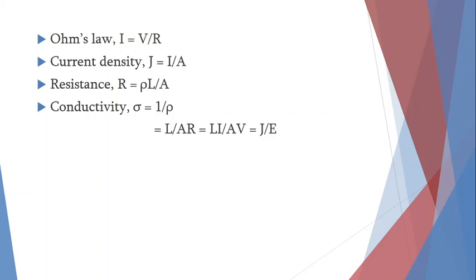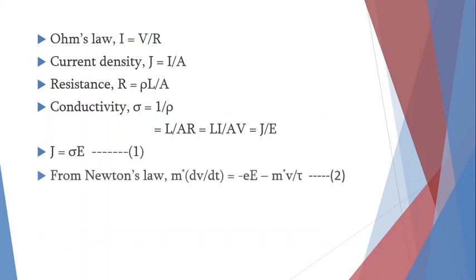Substituting R = V/I from Ohm's law, we can collect the terms I/A and L/V. I/A is the current density J, and V/L is the electric field E — that is, potential difference divided by length. So we can see that conductivity σ = J/E. Cross-multiplying gives current density J = σ × E. Let us call this equation number 1.